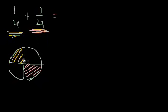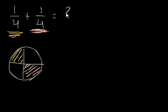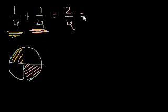You could see from just the picture: I have now eaten 2 out of the 4 pieces of the pie. So if I eat 1/4 of a pie and then I eat another 1/4 of a pie, I will have eaten 2/4 of the pie. And we know from the equivalent fractions module that this is the same thing as 1/2 of the pie, which makes sense — if I eat 2 out of 4 pieces, I've eaten 1/2.